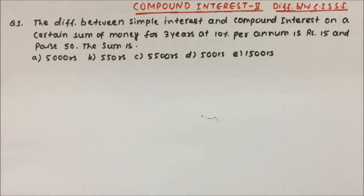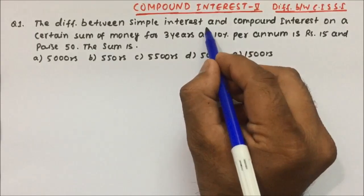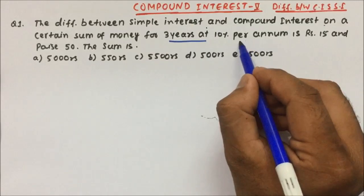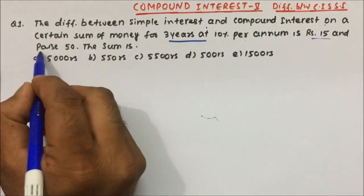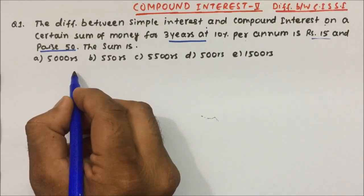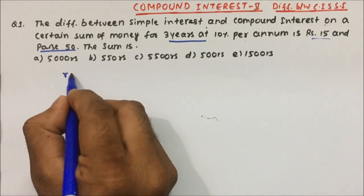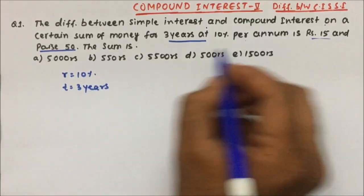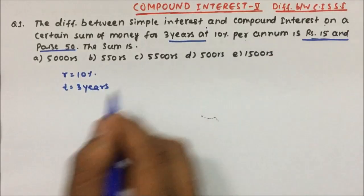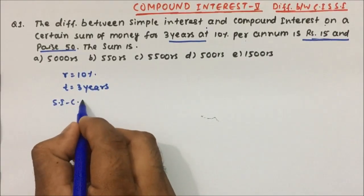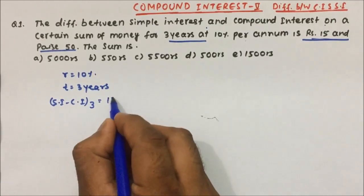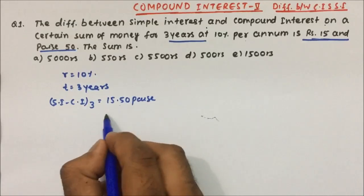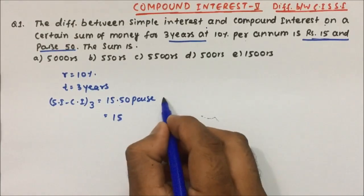Let's understand the question and try to solve it. The difference between simple interest and compound interest on a certain sum of money for 3 years at 10% per annum is rupees 15 and 50 paise. So rate is 10%, time is 3 years, and the difference between simple interest and compound interest for 3 years is 15 rupees 50 paise.